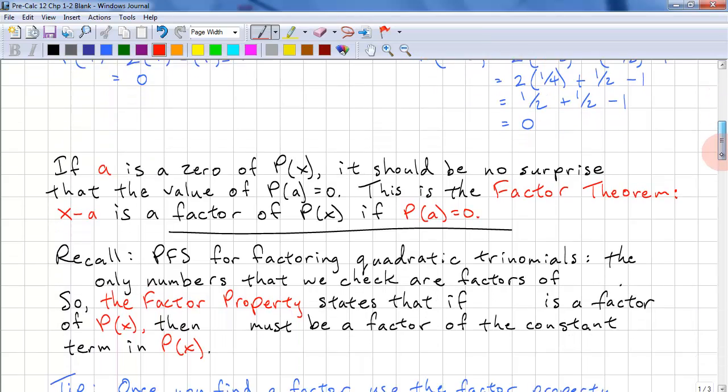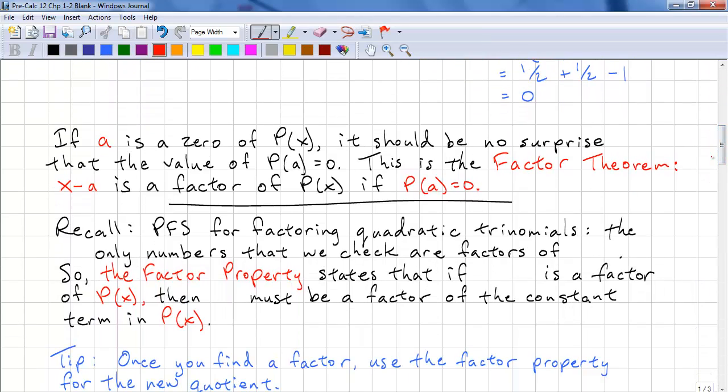And that leads to our second tool, the Factor Theorem. If a is a zero of P(x), then P(a) should equal 0. And if P(a) equals 0, that means x minus a is a factor of P(x).